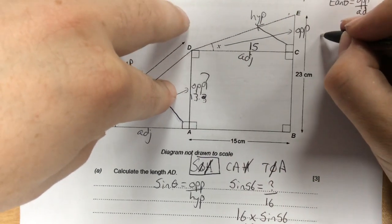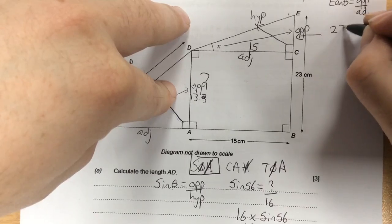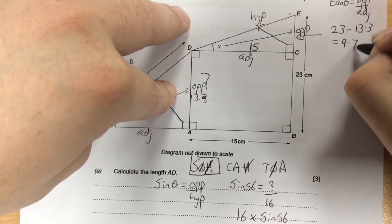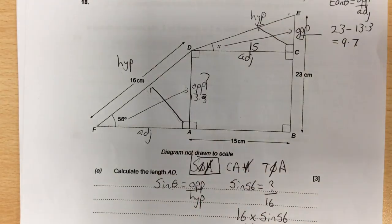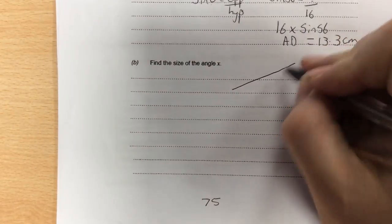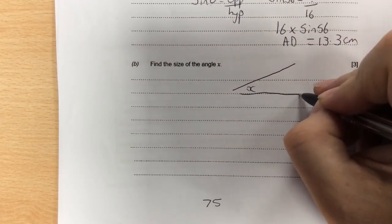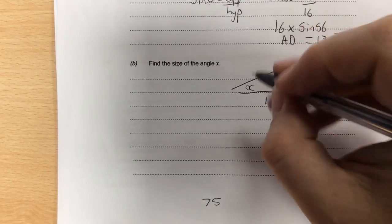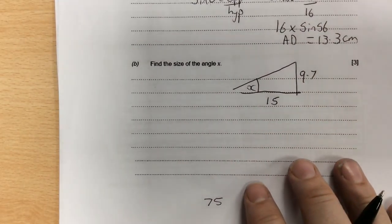This side is 13.3, which means that bit there is going to be 23 take away 13.3, which is 9.7. Now I'm using that triangle. The triangle has X on the bottom. This is 9.7, this is 15, and I'm trying to find X.